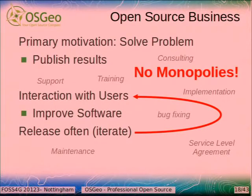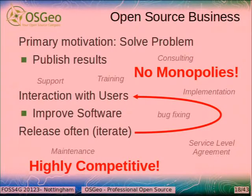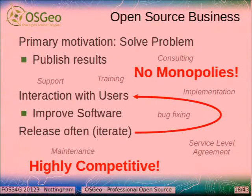What's special about this? There are no monopolies, because it's open source code and everybody can use it and everybody can provide these services. This thing is highly competitive. It's actually capitalism in its purest form. It's way far away from anything socialist — this is hard business. And it works. It works really well, as you can see at this conference.